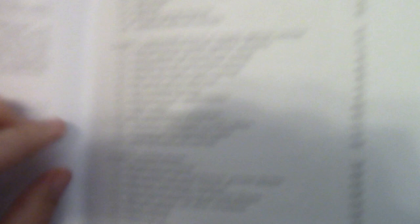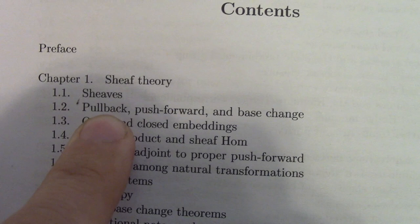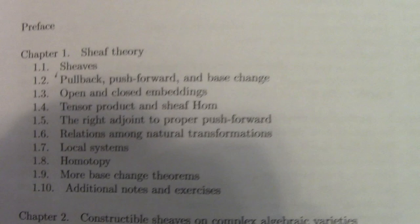Since I was just talking about perverse sheaves, let's talk about Achar's new book — I pre-ordered it before it came out — his book on Perverse Sheaves and Applications to Representation Theory. This is a fantastic book, but it is advanced. You open it up and it's like sheaf theory, and you think it's going to be an introduction to sheaves — but no, it's more like: remember how pullback is defined for the derived category? This is not an introduction to sheaf theory; know that going into it.